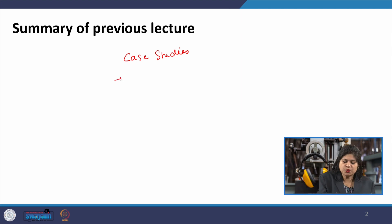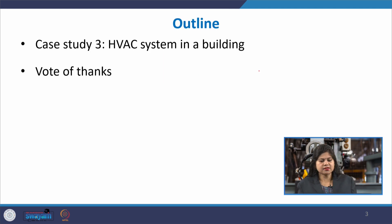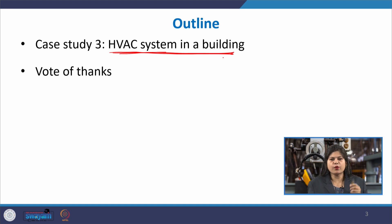Within this module, we have done a case study of a premium passenger car and then the case study of a passenger train. This is the last case study for this lecture course, where we will discuss an HVAC system in a building — what are the typical noise sources and how can we bring the noise level down.